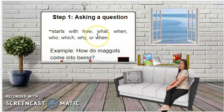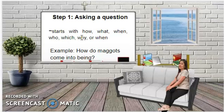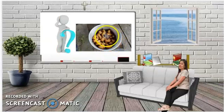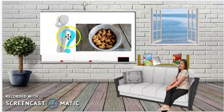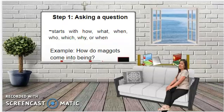Step one is asking a question. It starts with how, what, when, who, which, or why. For example: how do maggots come into being? Are you familiar with maggots? Here is a picture of them. This is the first step of the scientific method — asking a question: how do maggots come into being?